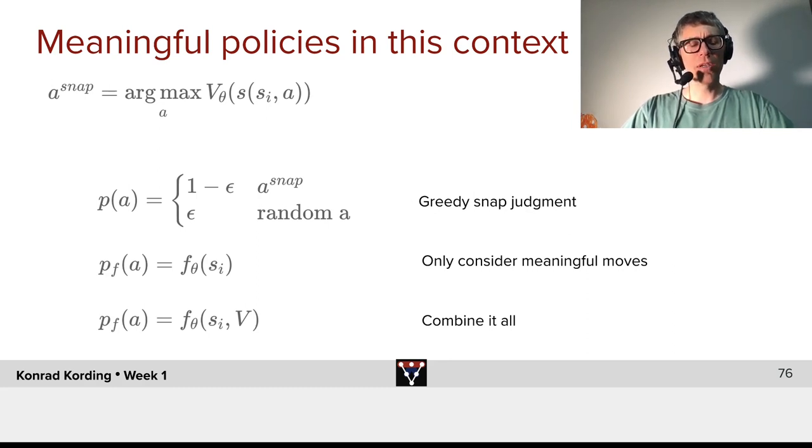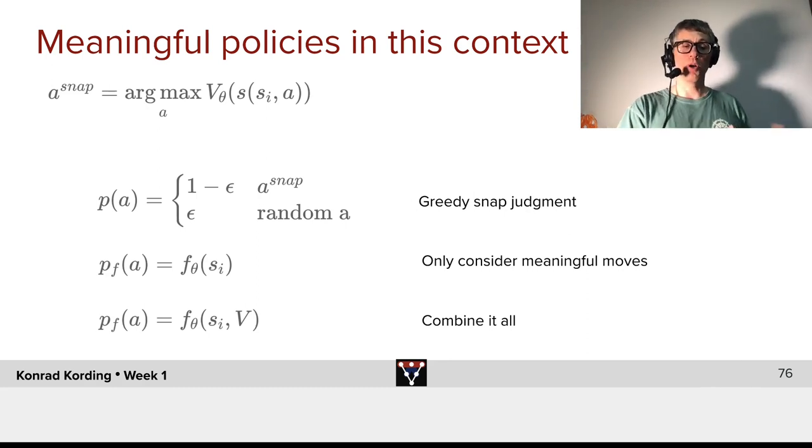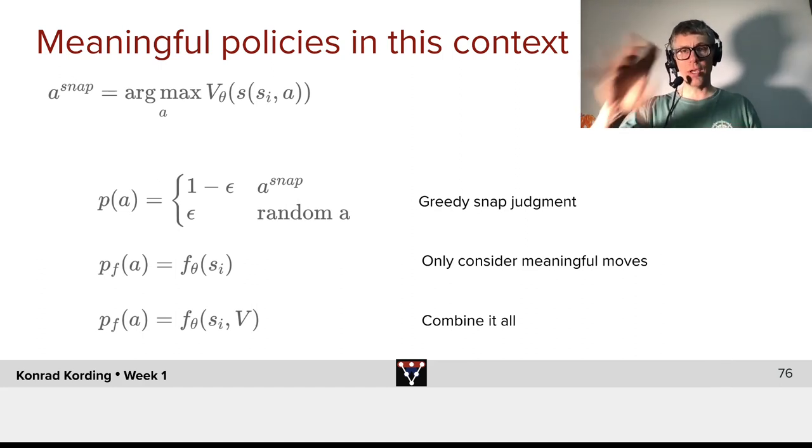Alternatively, we could formulate this as a deep learning problem, where we can say the probability of an action is a function that depends on parameters of the bot. So basically, we look at the bot and figure out what the good moves are here.